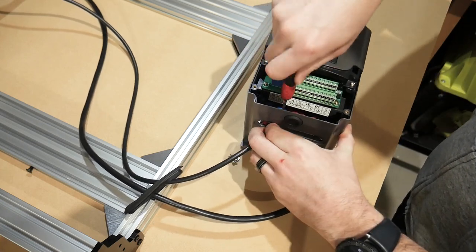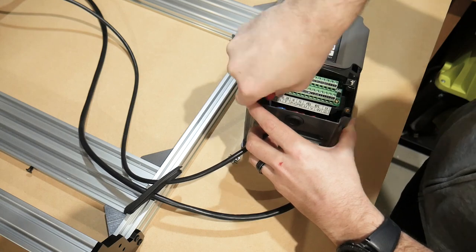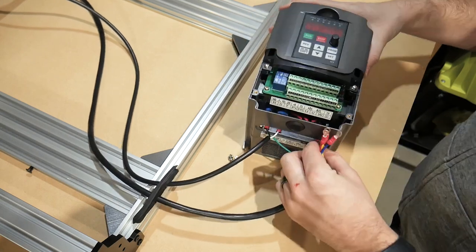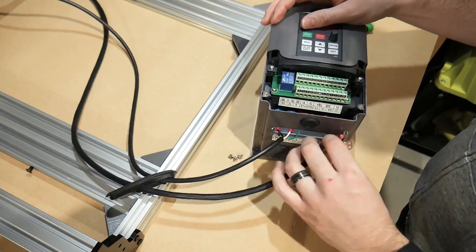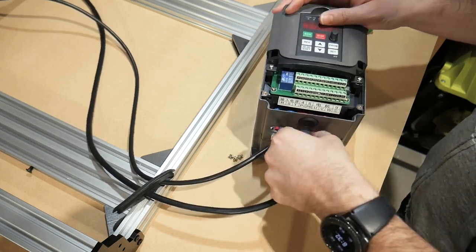As for wiring the spindle, you can get away with any combination of the U, V, and W terminals as long as the ground wire is correct. If the spindle spins the wrong way, you just need to swap two of the spindle wires.